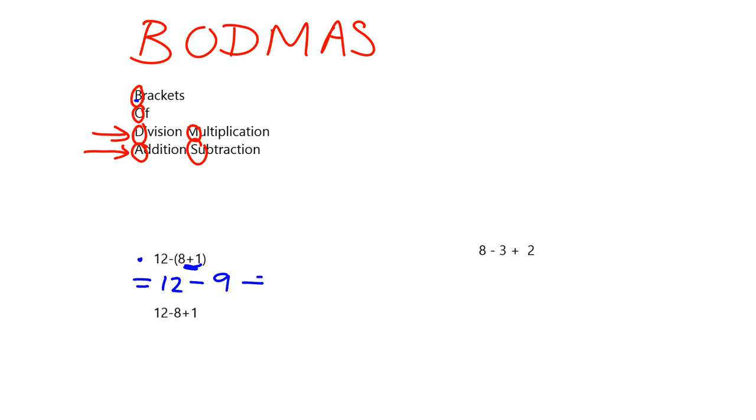What about this one over here where we've got 12-8+1? Will that get us to a different answer? Well, the only operations that are in this are subtraction and addition, and BODMAS tells us very clearly that addition and subtraction are at the same level, so not one more important than the other. So what we need to do then is simply work from left to right. Working from left to right we say 12-8, that gives me 4, and then 4+1 which will give me 5 as my answer.